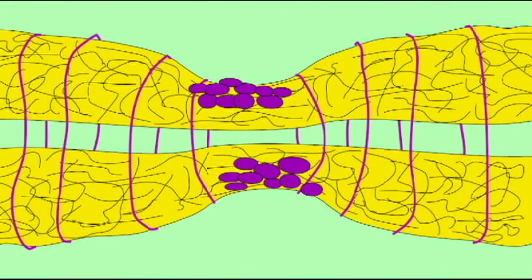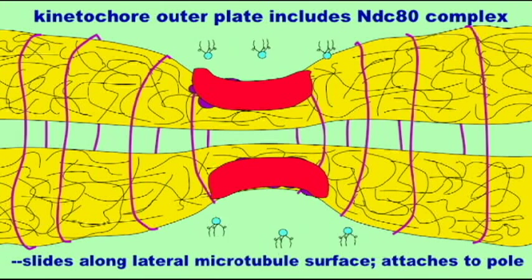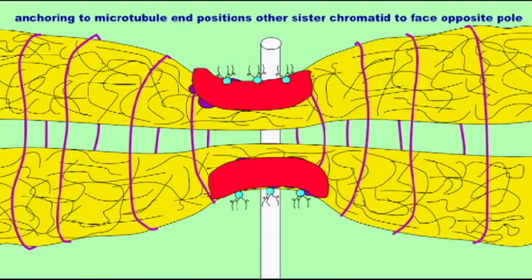The opposite kinetochore faces the opposite pole of the cell. This will help the attachment of a kinetochore fiber from the opposite pole of the cell to that kinetochore.